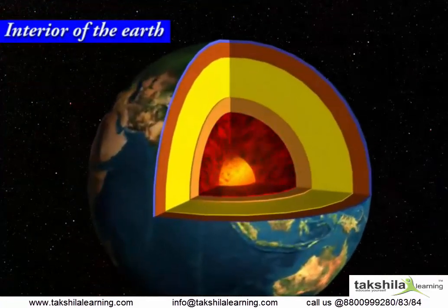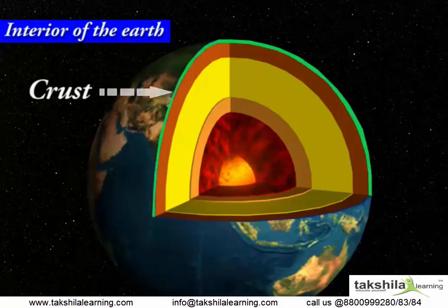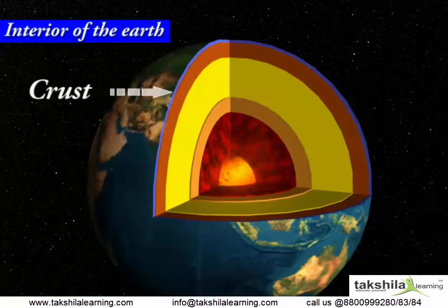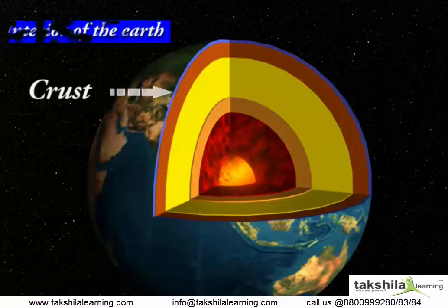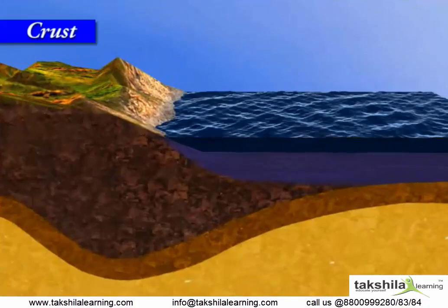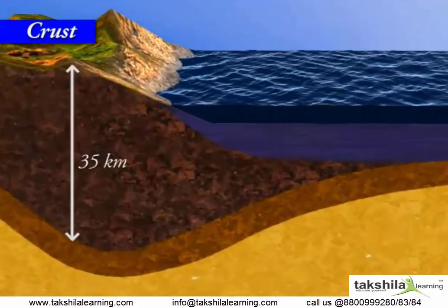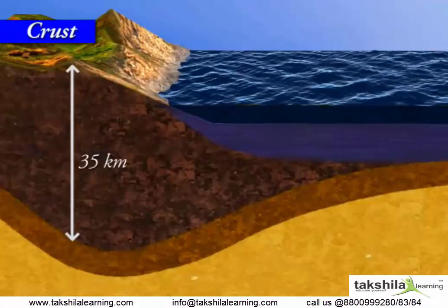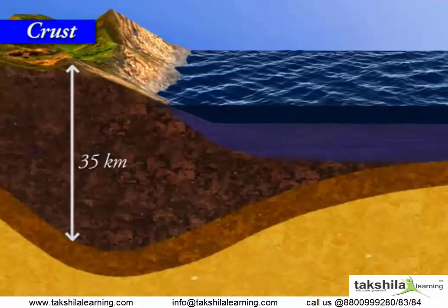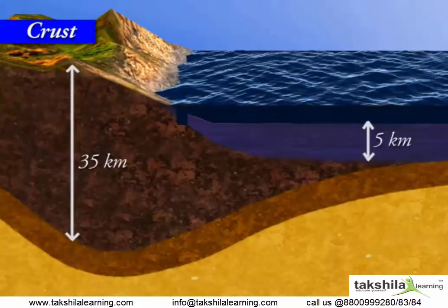The uppermost layer over the Earth's surface is called the crust. It is the thinnest of all the layers. It is about 35 km on the continental masses and only 5 km on the ocean floors.